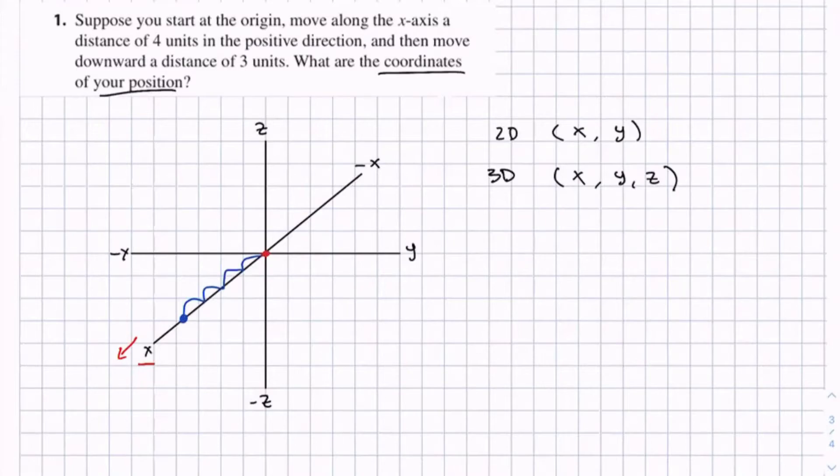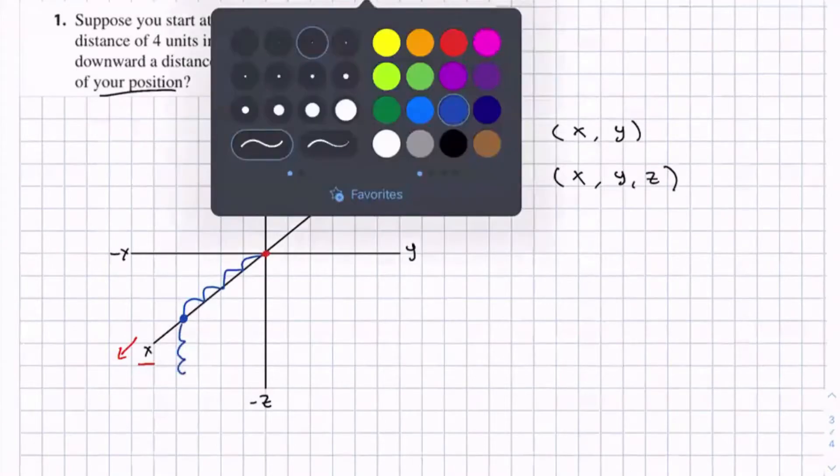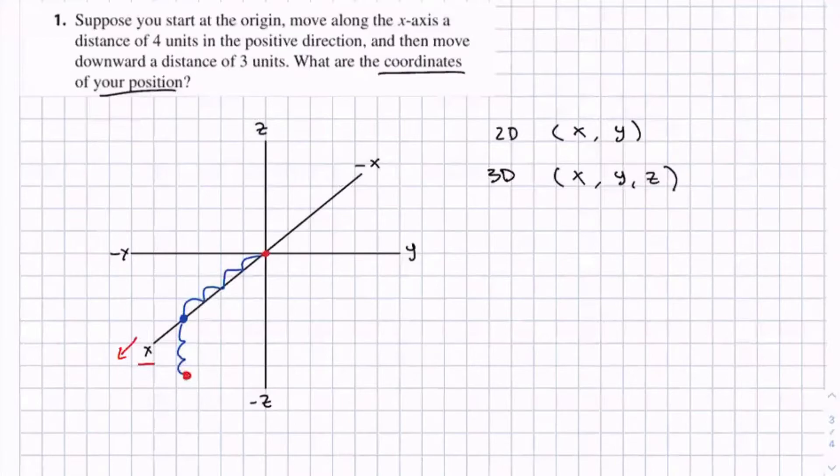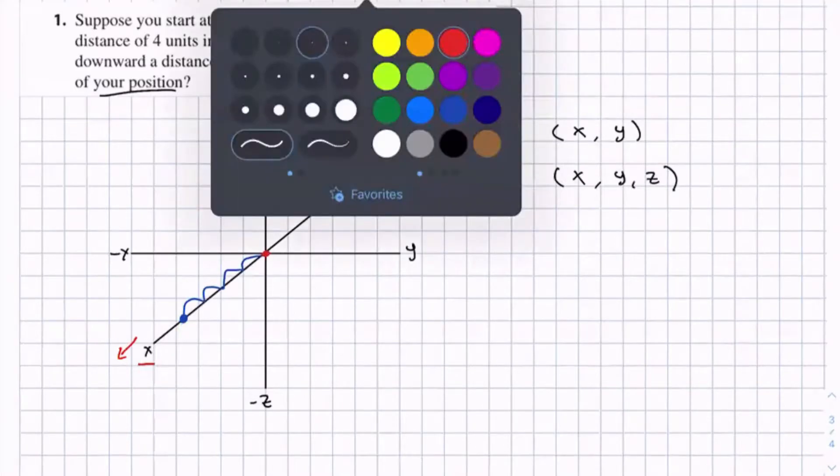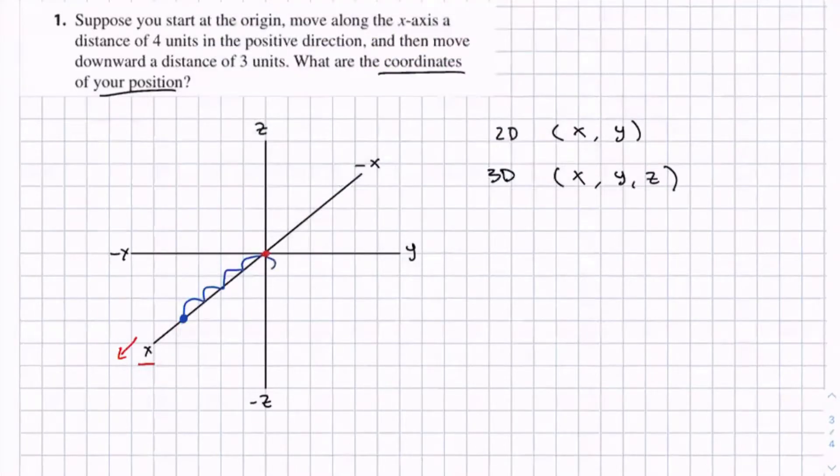And so you could do it like this: 1, 2, 3, and you get your point here. But sometimes it's hard to visualize and can get pretty complicated if you have a lot of points.